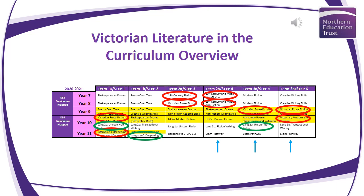At the bottom of the curriculum overview you'll also see three arrows where it leads up to the exam pathway. That's individual for each academy, to see what's necessary for their particular academy — perhaps something that needs to be revisited, for example, either A Christmas Carol or the unseen non-fiction, as previously mentioned.